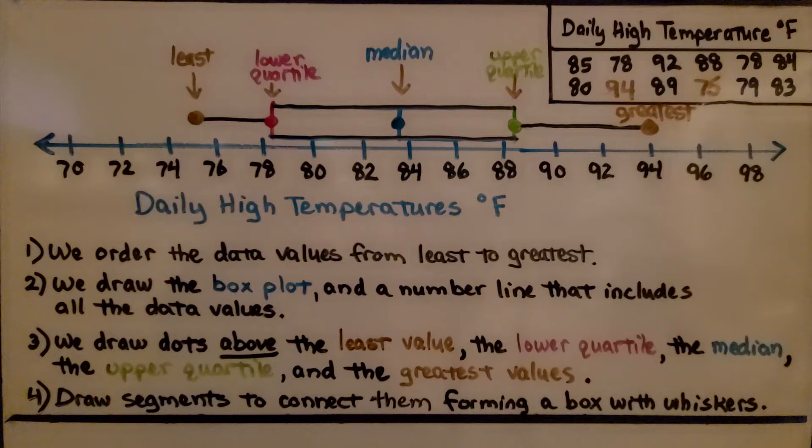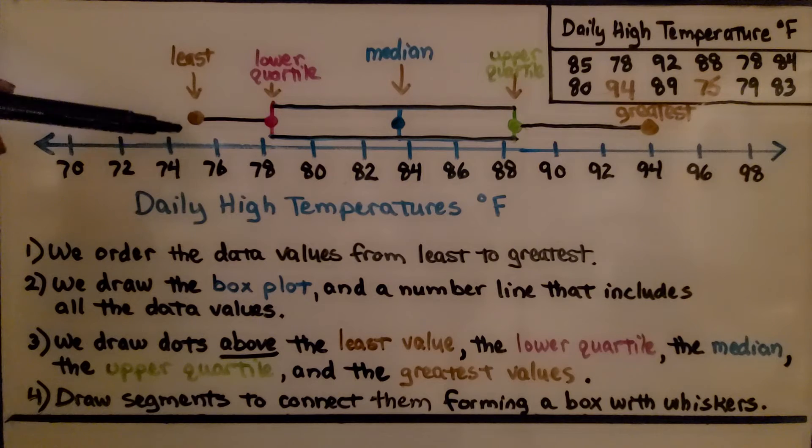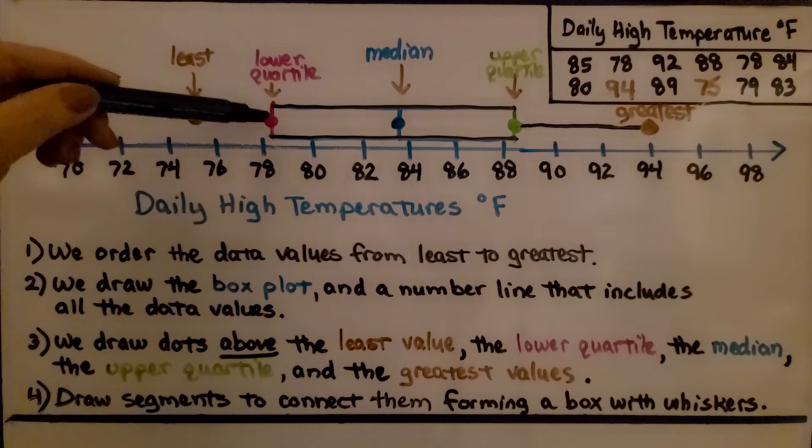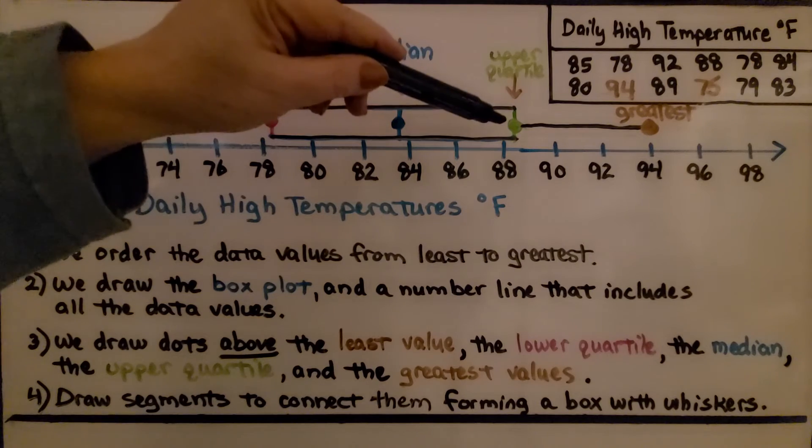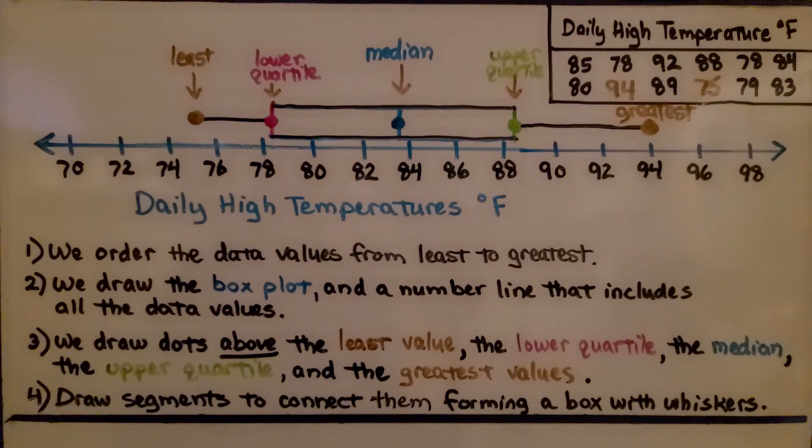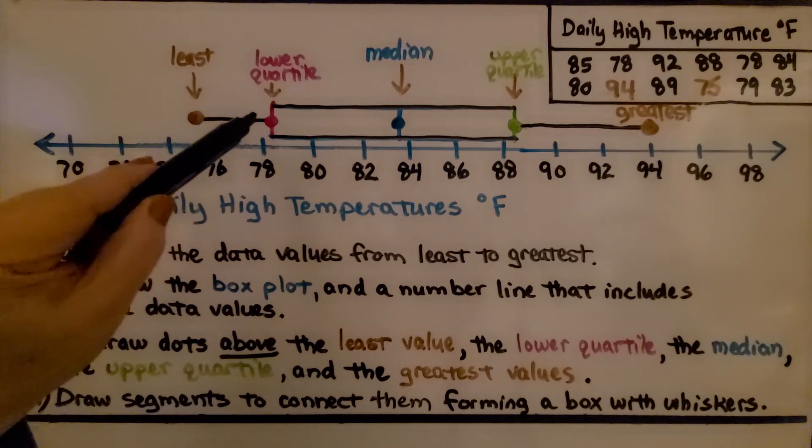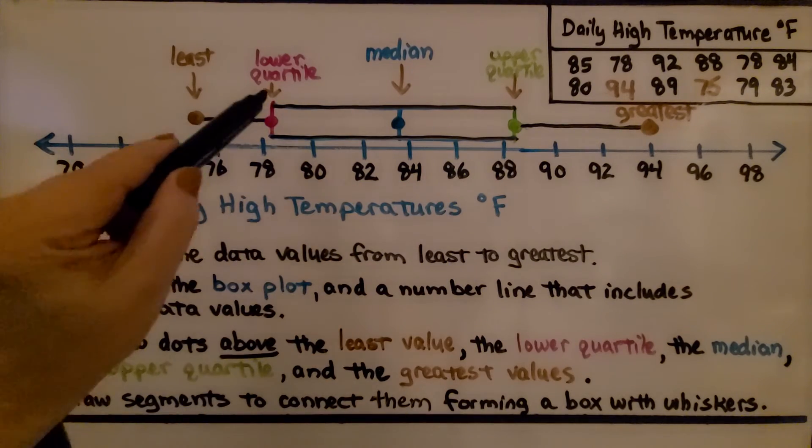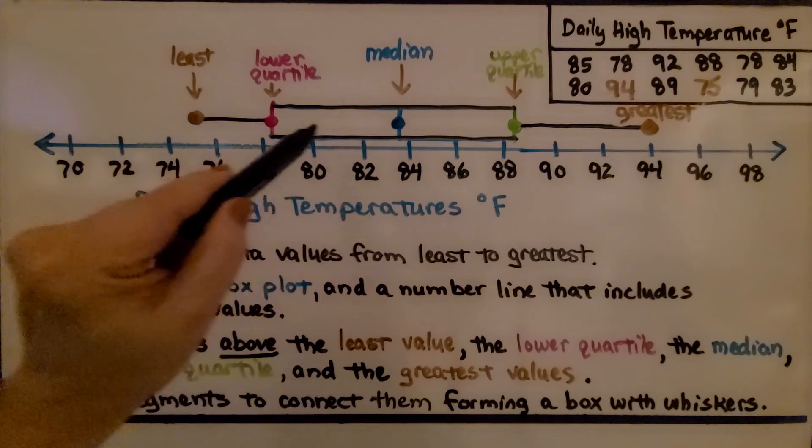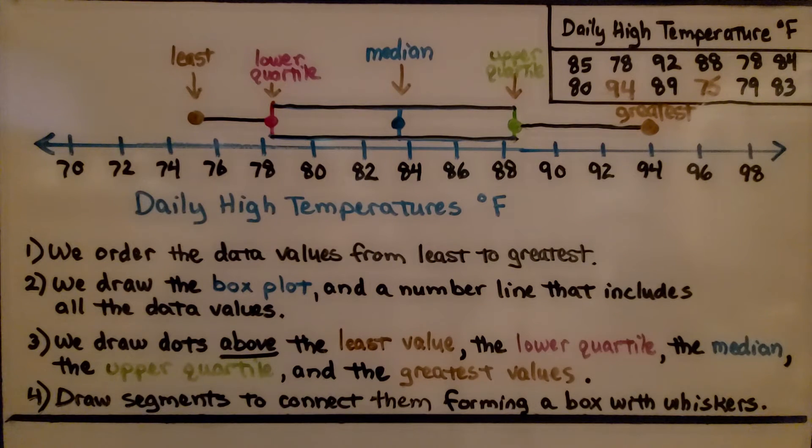We order the data values from least to greatest. And we draw a box plot and a number line that includes all the data values. We draw dots above the least value, the lower quartile, the median, the upper quartile, and the greatest values. Then we draw segments to connect them. Here's the whiskers on each side, and we draw segments here, forming a box with whiskers.